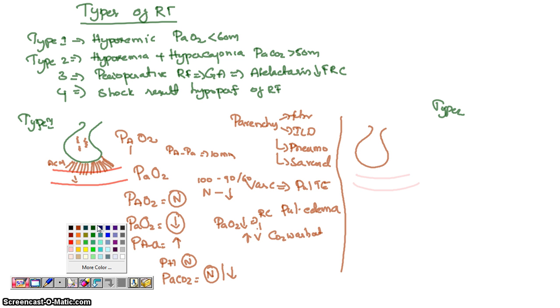Now what happens here is, type 2 is characterized by what we call pump failure. There it is a diffusion defect; here it is pump failure, or alveolar hypoventilation.